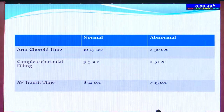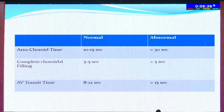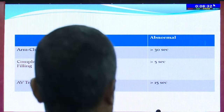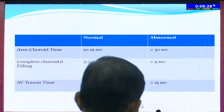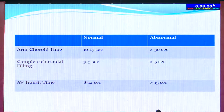Key timings to keep in mind: the arm-to-choroidal time is normally 10 to 15 seconds, and anything more than 30 seconds is labelled abnormal. Complete choroidal filling takes place in around 3 to 5 seconds, and anything beyond 5 seconds is abnormal. The AV transit time is normally about 8 to 12 seconds, and anything beyond 15 seconds is considered abnormal.